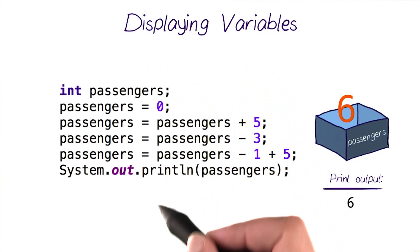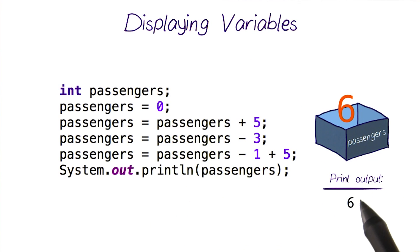Which means, if we run this program here, we get this print output 6, which happens to be the value of our variable passengers here.